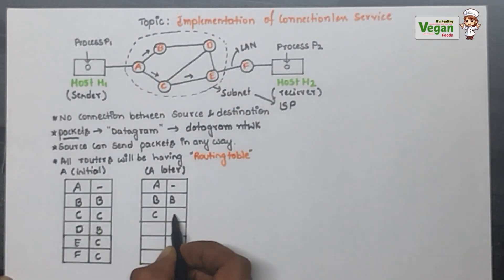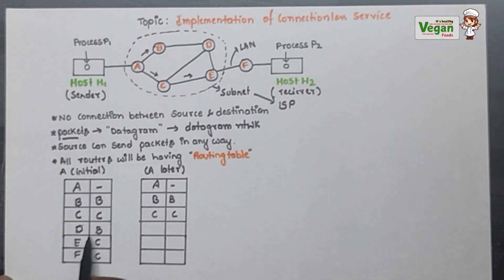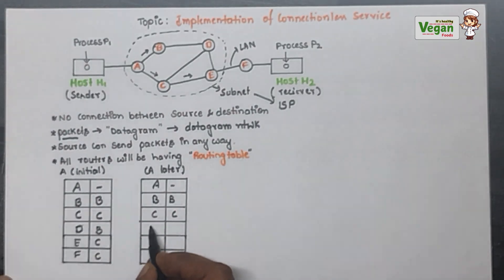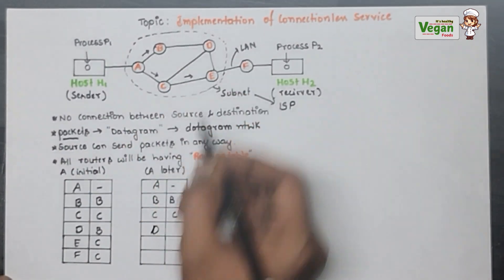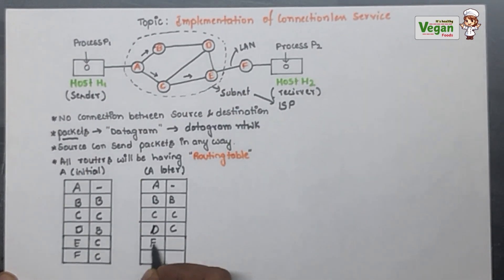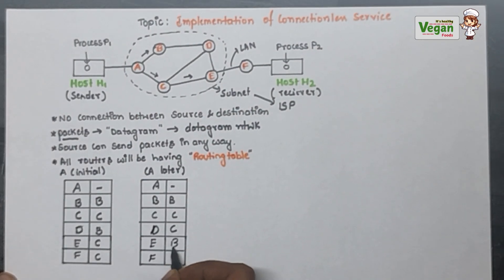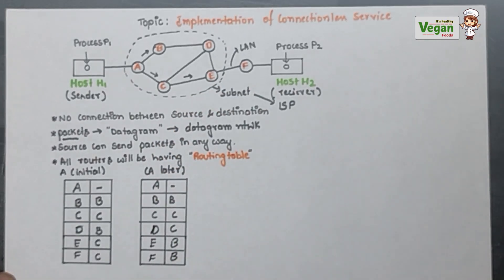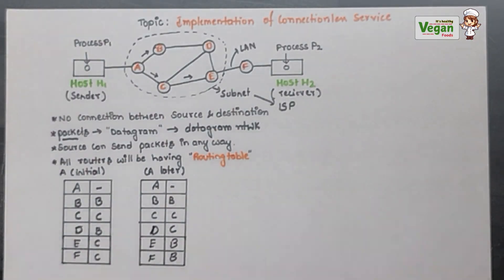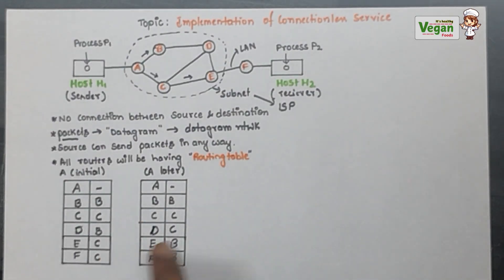In the later routing table, to send to B there is only one path so it remains B, and for C it remains C. To D, initially we sent through B, but now we can also send through C, so we update D's entry to go through C. For E and F, initially sent from C, but now we can use B — through B router it goes to D, from D to E, from E to F, and finally it is received at the destination.